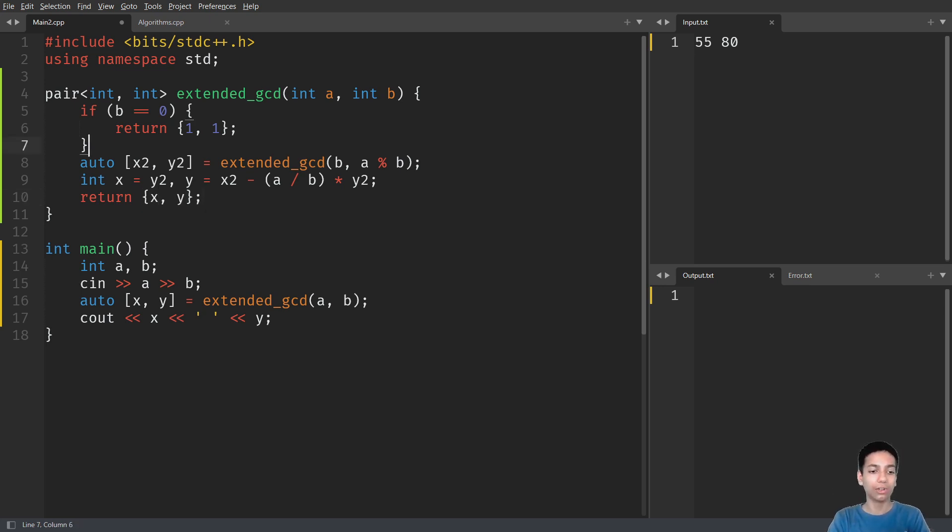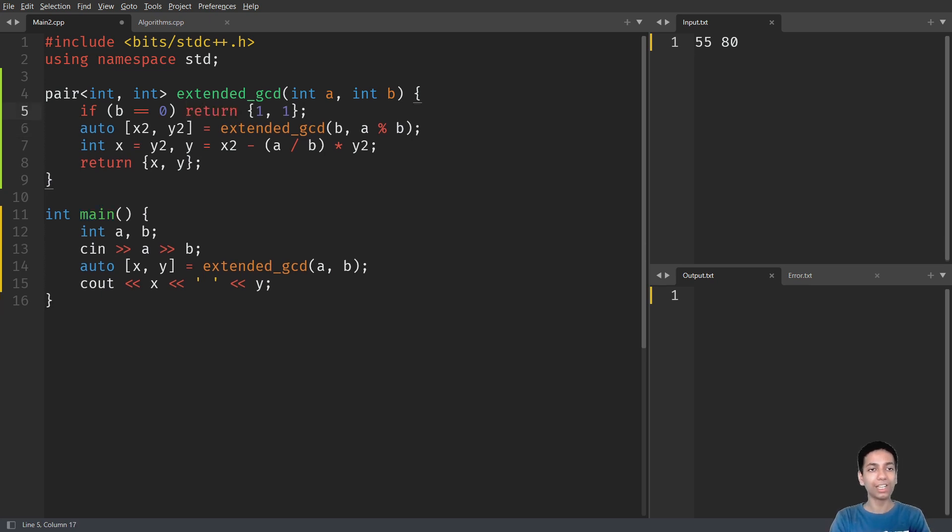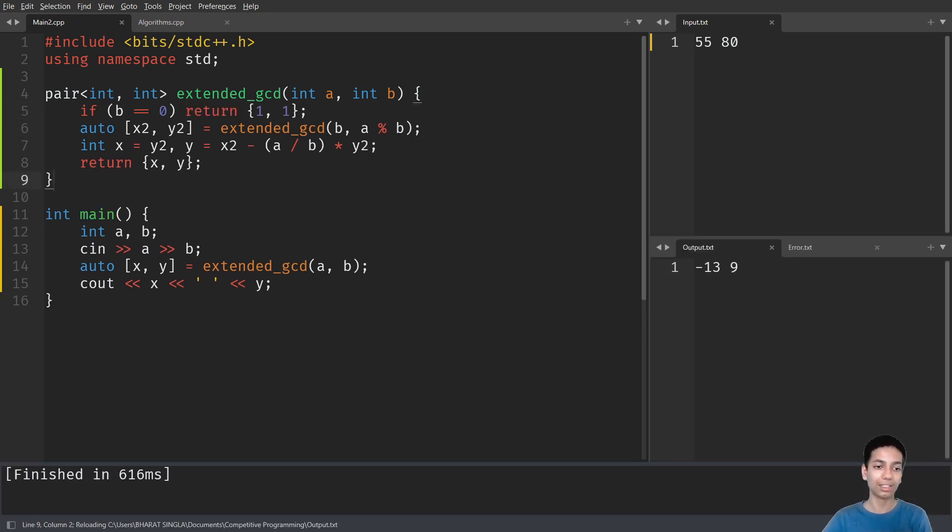This is the algorithm, pretty short and pretty easy to understand. It's just basic mathematics. Let's quickly run this. We get minus 13 and 9.